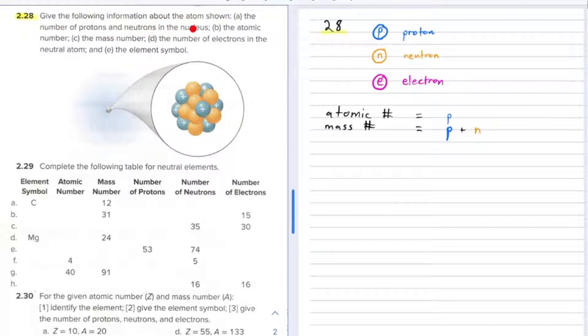The problem asks for: the number of protons and neutrons in the nucleus, the atomic number, the mass number, the number of electrons in the neutral atom, and the element symbol. So first of all, the number of protons and neutrons in the nucleus.